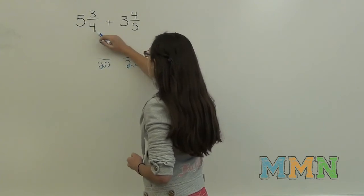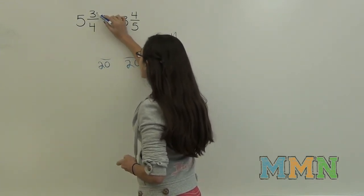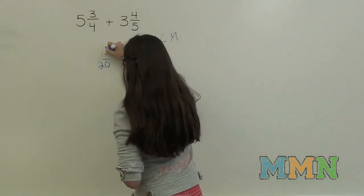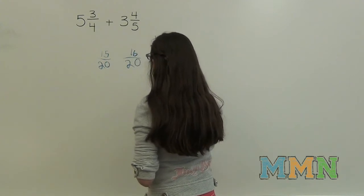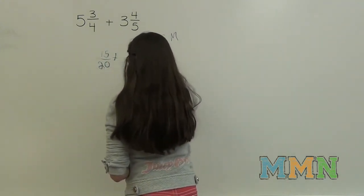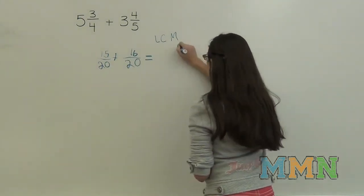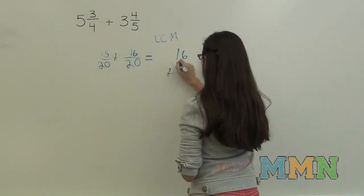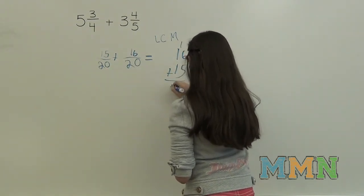Then you have to do the same with the numerator. So 5 times 3 is 15. And 4 times 4 is 16. And then you'll add the numerators. 16 plus 15 is 31.